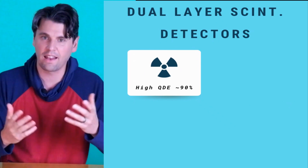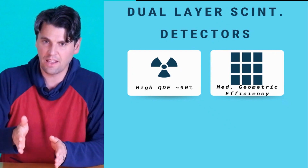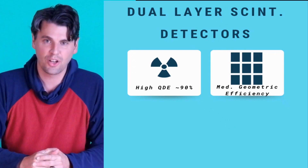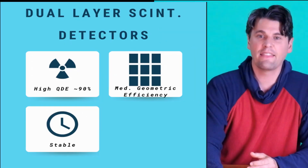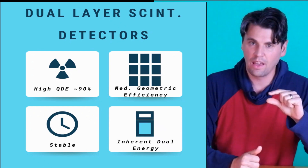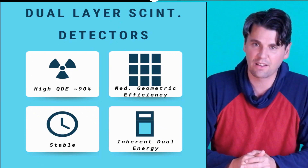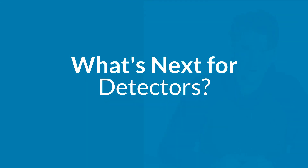Dual-layer scintillator detectors have high quantum detection efficiency because of those two scintillator layers, though geometric efficiency is slightly lower since the side-mounted photodiodes take up more space. These systems are very stable and have an inherent ability to perform dual-energy imaging, since the two readouts provide sensitivity to lower versus higher energy x-rays. Right now virtually all CT systems in the field use scintillator-based detectors. A handful of systems with photon-counting detectors are just coming to market — drop a comment if you'd like a video on that technology.